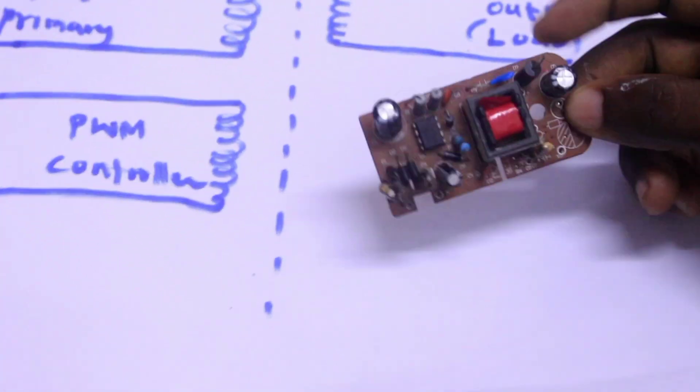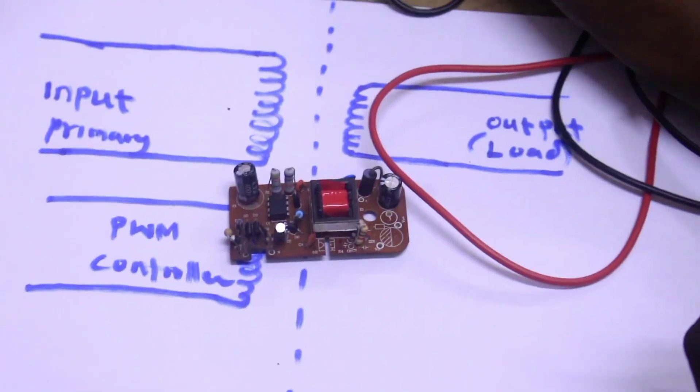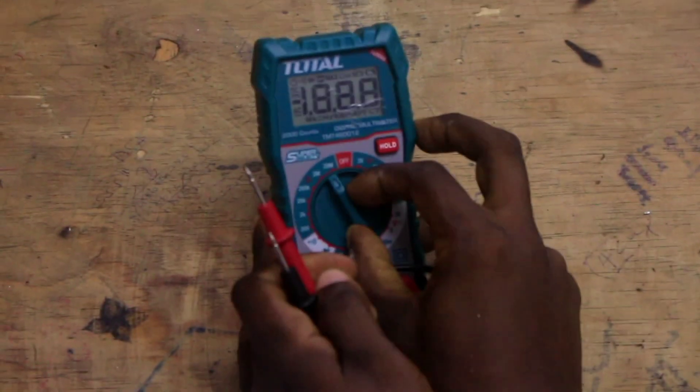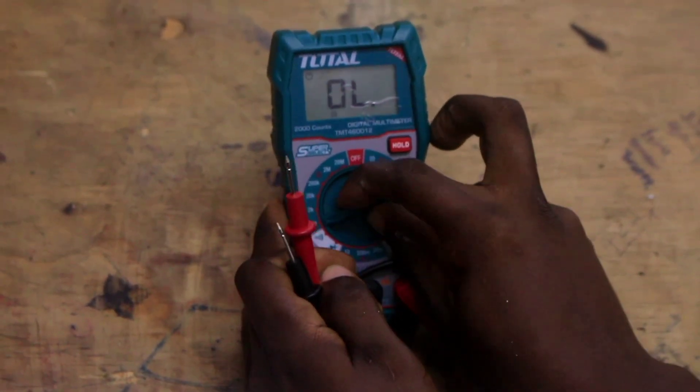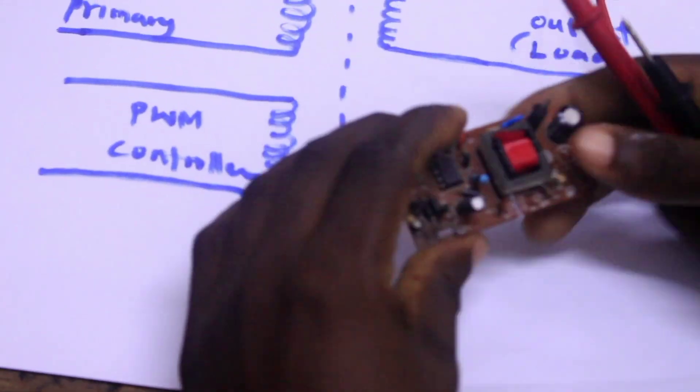How can we test if this transformer is okay? To test this transformer first, switch our multimeter to 200 ohm and you can see this transformer consists of three windings.